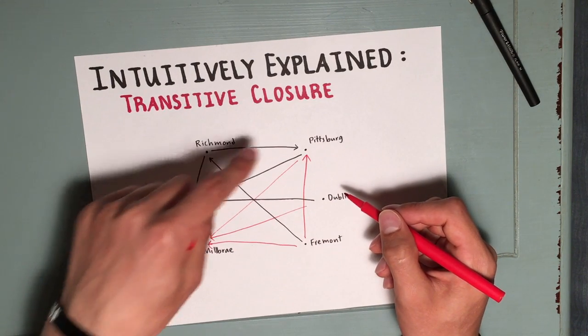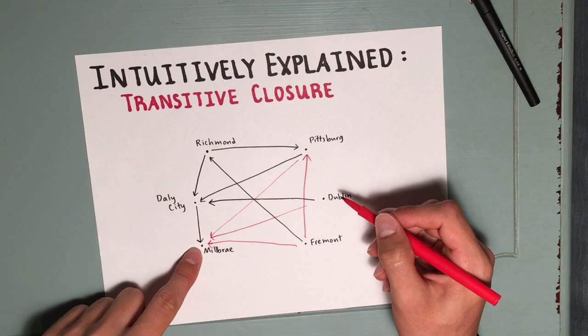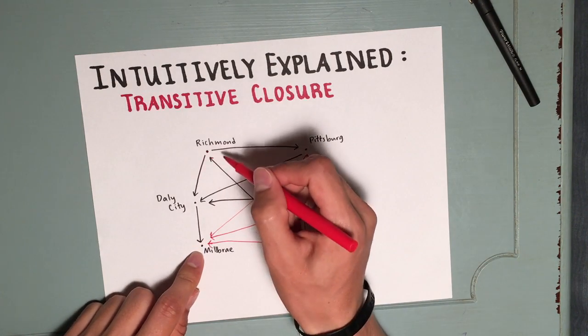From Richmond, we go to Pittsburgh, and then to Daly City, and then to Millbrae. So that adds in a direct line from Richmond to Millbrae.